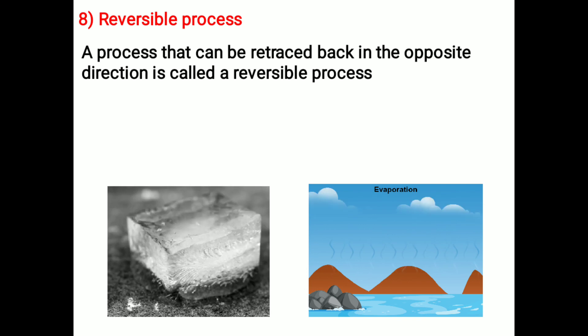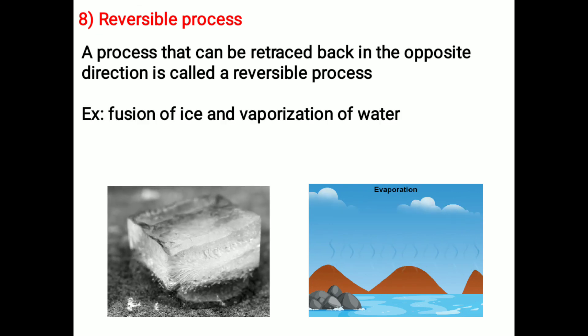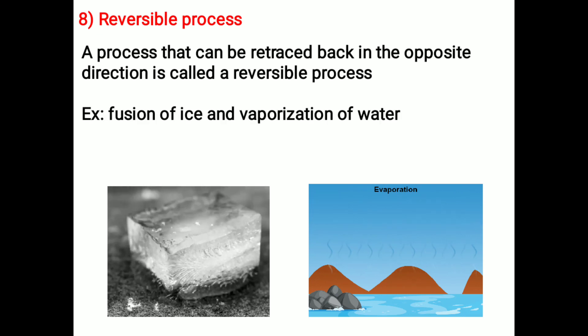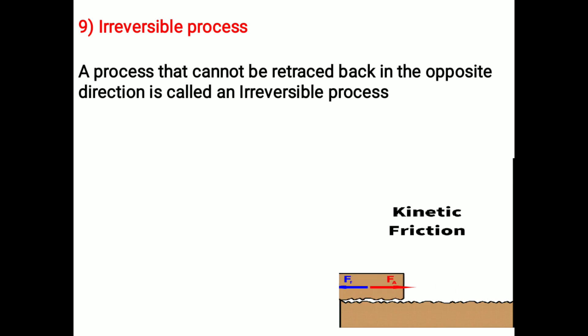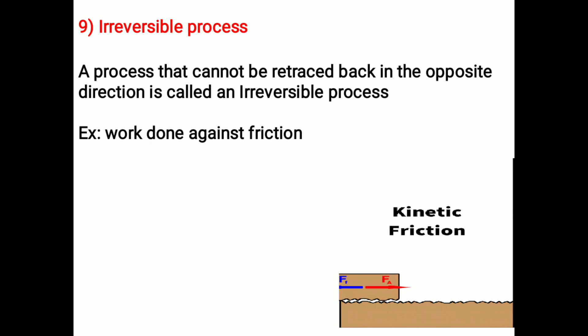Reversible process: the process that can be retraced back in the opposite direction is called a reversible process. Example: fusion of ice and vaporization of water. Irreversible process: the process that cannot be retraced back in the opposite direction is called an irreversible process. Example: work done against friction.